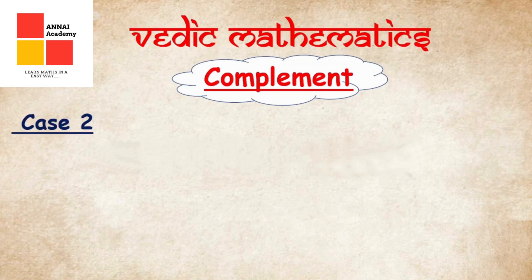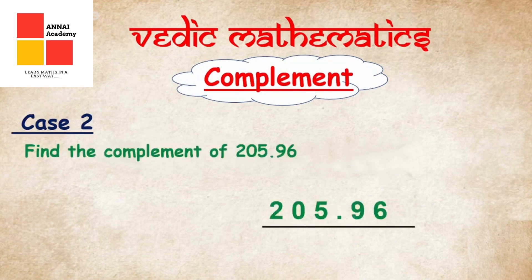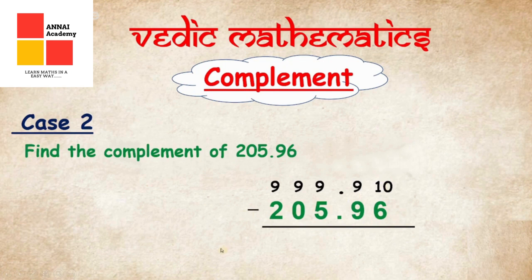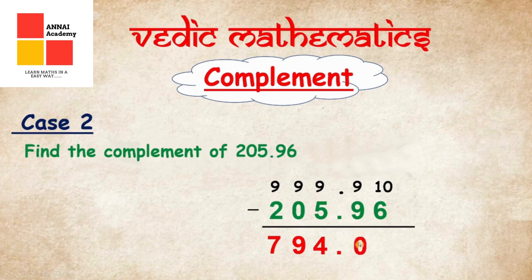Now let's find the complement of a number which has a decimal. The number is 205.96. Remember the formula: All from 9 and last from 10. The decimal point stays as a decimal point. Starting from the left: minus 2 from 9 gives 7, minus 0 from 9 gives 9, minus 5 from 9 gives 4, then we put the decimal point, minus 9 from 9 gives 0, and minus 6 from 10 gives 4. So the complement of 205.96 is 794.04.